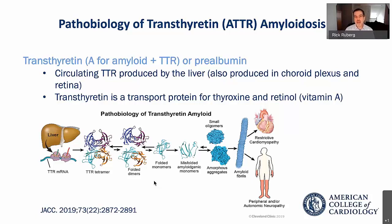As you can imagine, treatment — which will be discussed in a future Quick Tips presentation by Dr. Maurer — will address how TTR amyloidosis could be managed either through inhibiting liver synthesis or through stabilization of the protein.